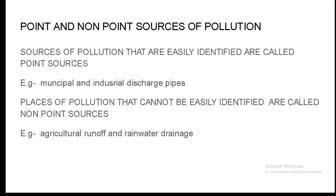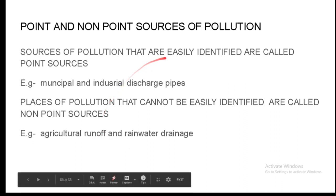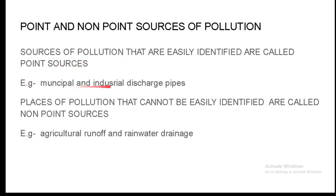There are two types of sources of pollution: point sources and non-point sources. Sources of pollution that are easily identified are called point sources; examples include municipal and industrial discharge pipes, where we can exactly know the location of the pollution. Places of pollution that cannot be easily identified are called non-point sources; examples are agricultural runoff water and rainwater drainage, where we cannot actually pinpoint where the source of pollution occurs.